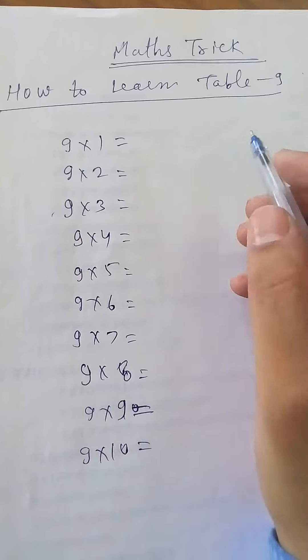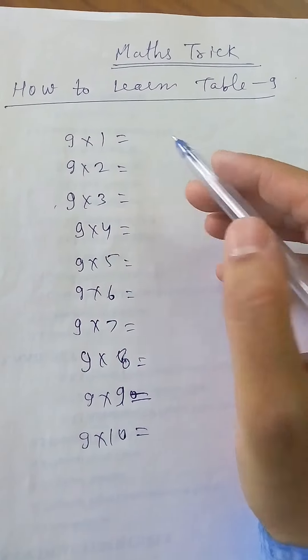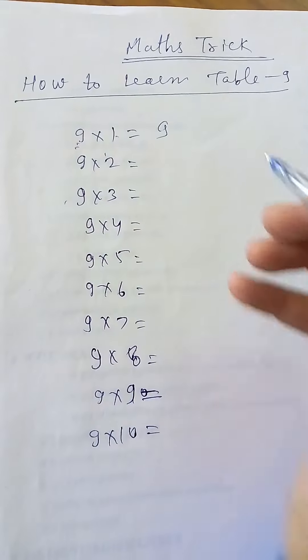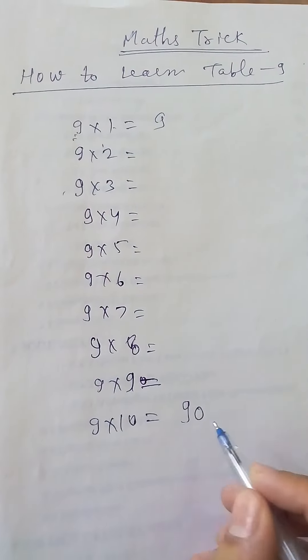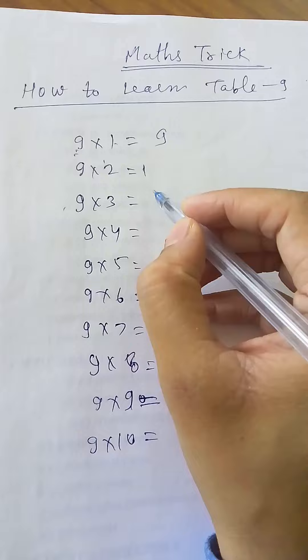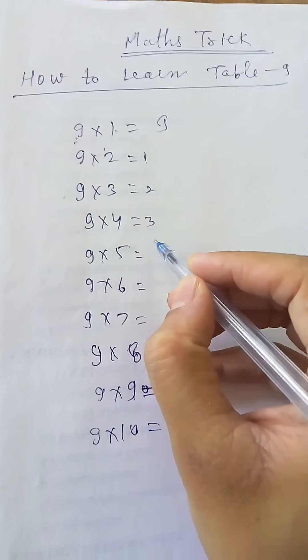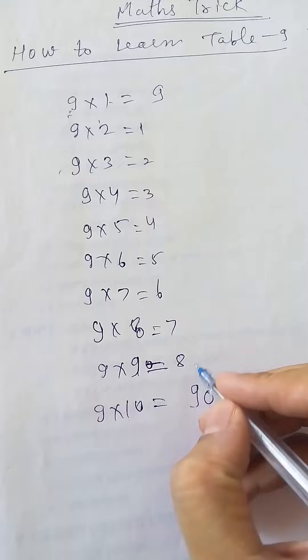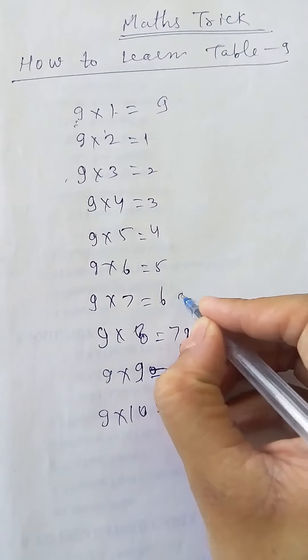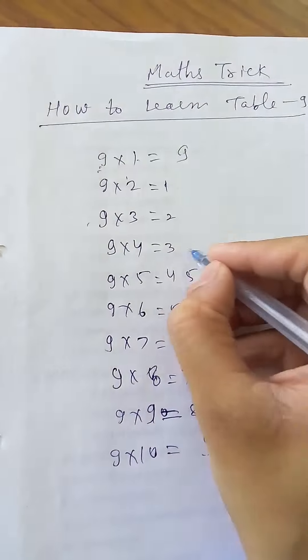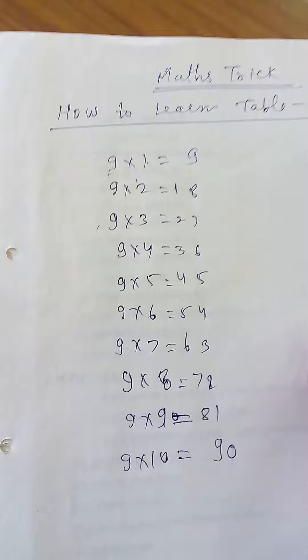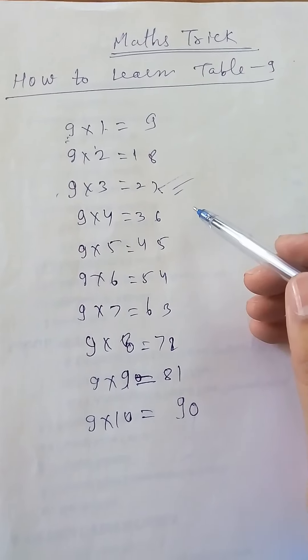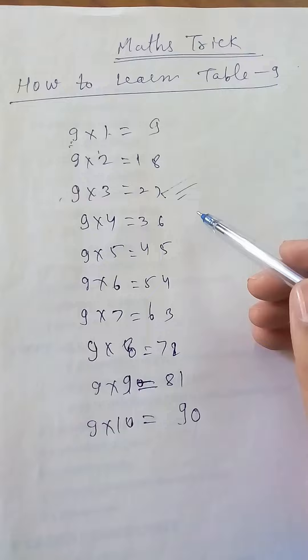In this video we learn how to learn table 9. Here we know that 9 ones are 9 and 9 tens are 90. Then we write 1, 2, 3, 4, 5, 6, 7, 8, then again 1, 2, 3, 4, 5, 6, 7, 8. This is the table of 9. So this is the short trick to learn table 9.